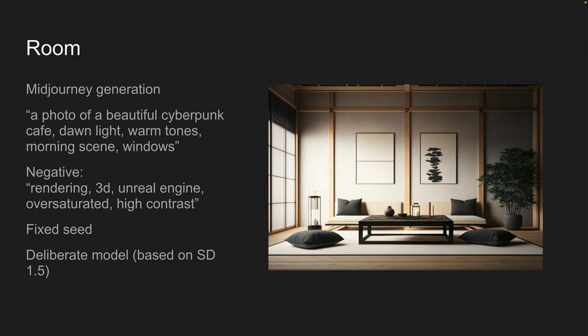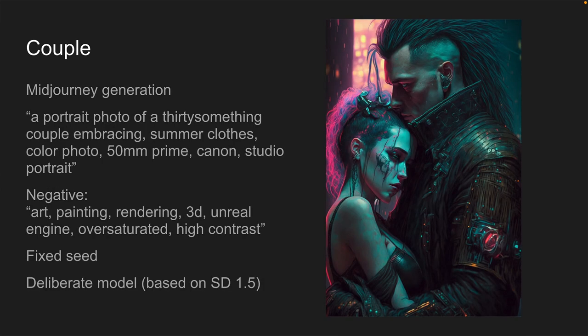I'm going to start with this room picture — this is a MidJourney generation — and I've got a prompt that should change the image quite substantially. We've got this sort of Japanese tea room, living room, and we're going to try and change it into a sort of cyberpunk cafe, changing the light to something that's sort of dawn light, warm tones, morning scene with windows. We're going to use the same seed for every render, and this is all going to be generated using the deliberate model, which is based on Stable Diffusion 1.5.